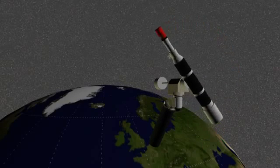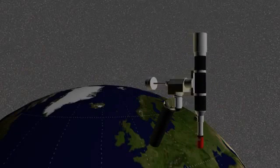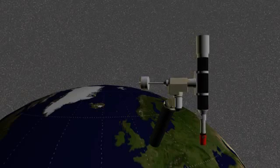The declination axis is for pointing at the stars. Right ascension is for compensating Earth's rotation and pointing at stars.